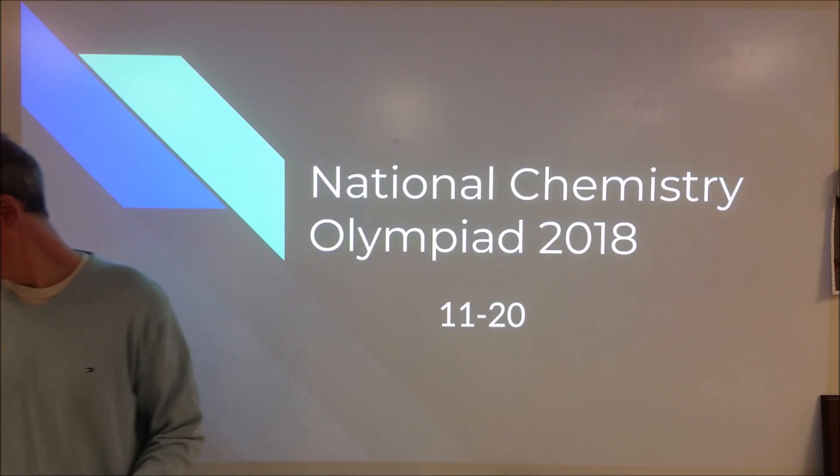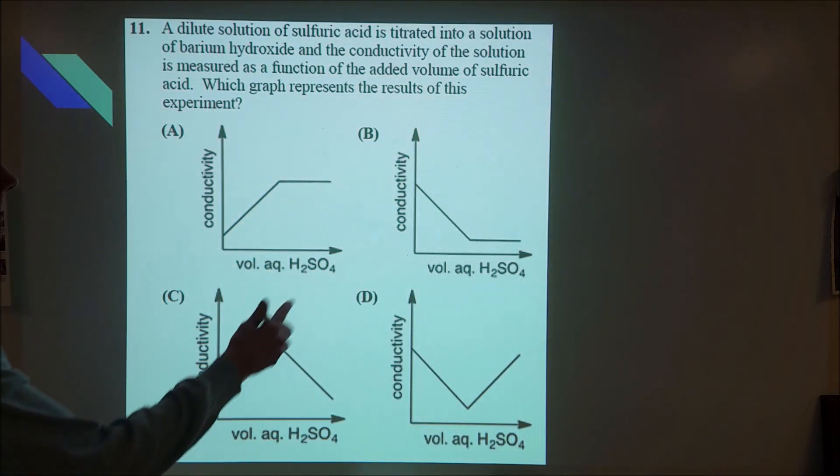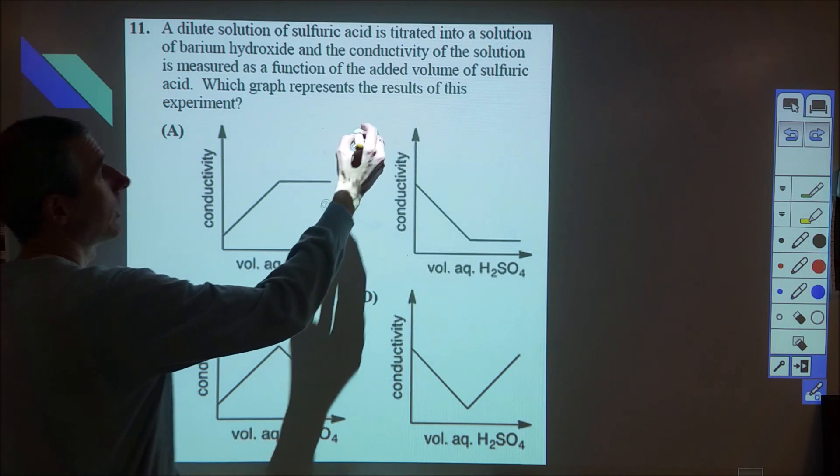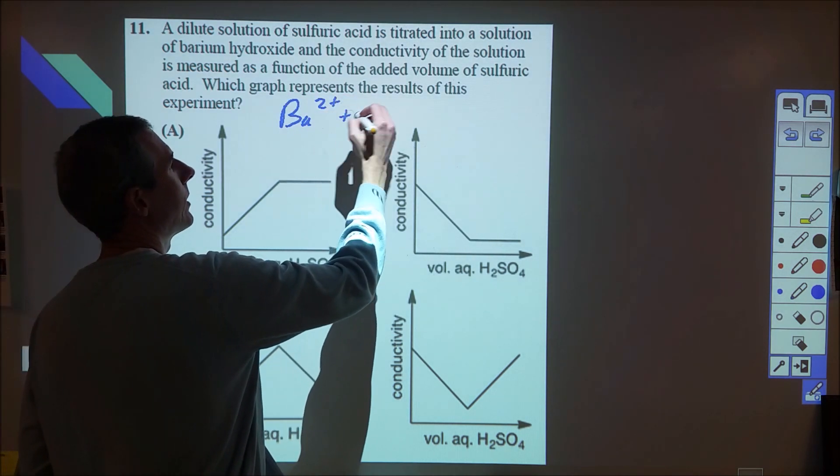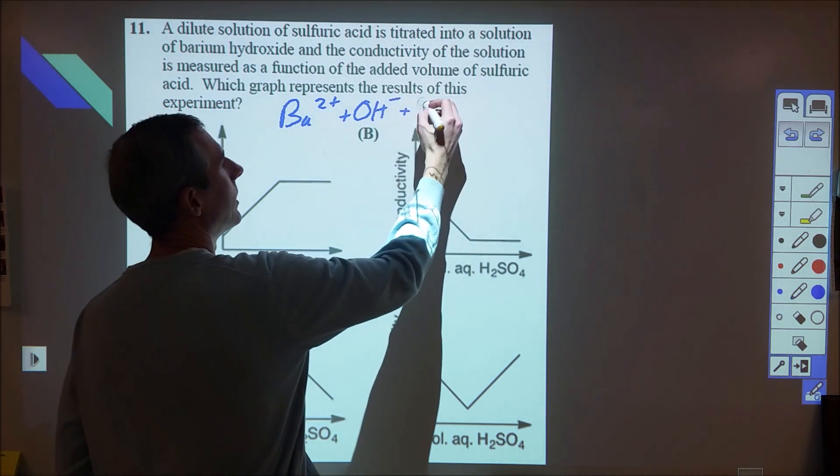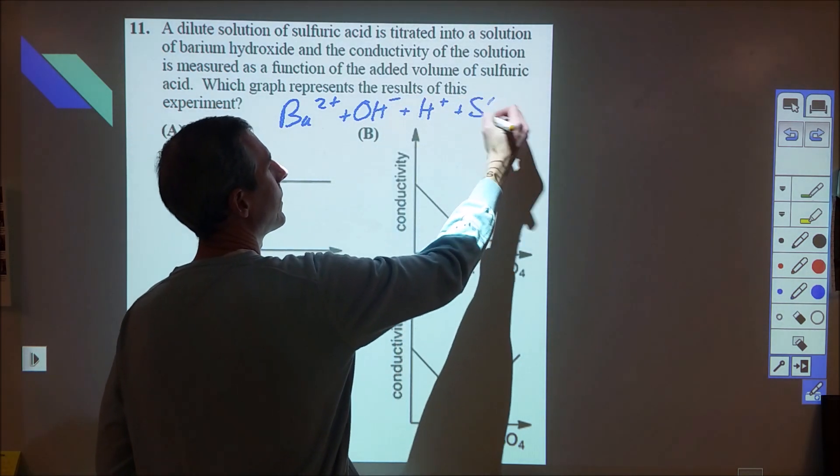Continuing on then, problems 11 through 20. In this question we're looking at sulfuric acid and barium hydroxide, and if you look at the net ionic equation, basically what we have is barium and hydroxide and H plus sulfate.